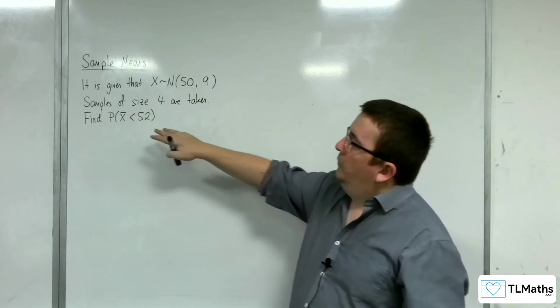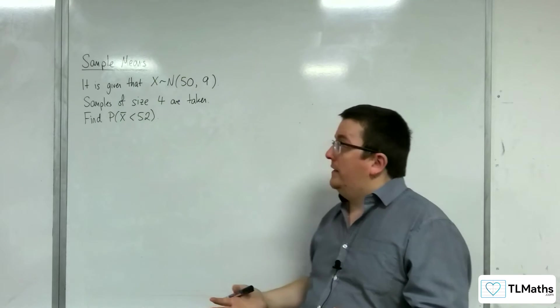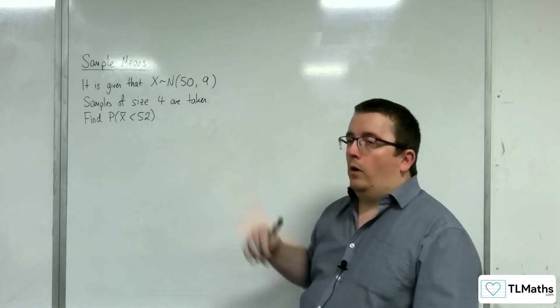So, find the probability that a sample of size 4 that I randomly select has a mean that is less than 52. This is what that question is asking.